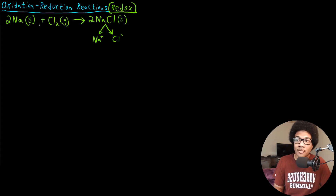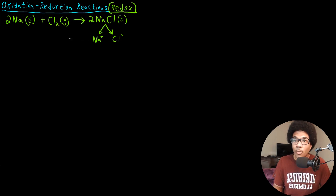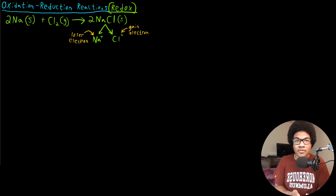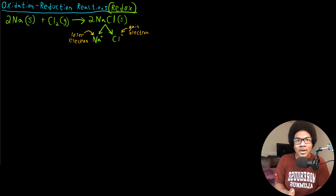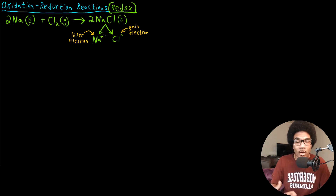That's very different from what we have in the reactants. In the reactants, we have solid sodium, neutrally charged, and chlorine as a diatomic gas, also neutrally charged. What's actually happening is that electrons are being transferred. The sodium actually loses an electron, and the chlorine gains that electron. So an electron is lost by one compound and gained by another — this defines a lot of reactions in chemistry. Keeping track of those electrons is a huge part of describing what's going on in a chemical reaction.